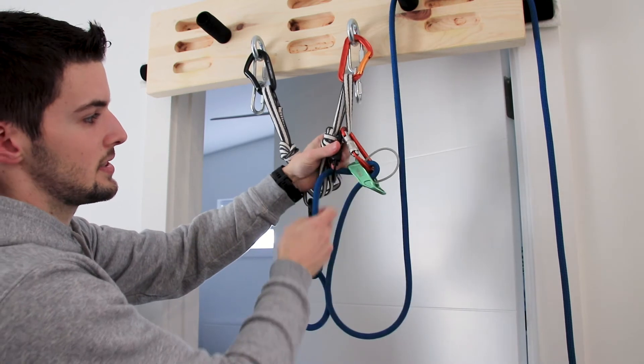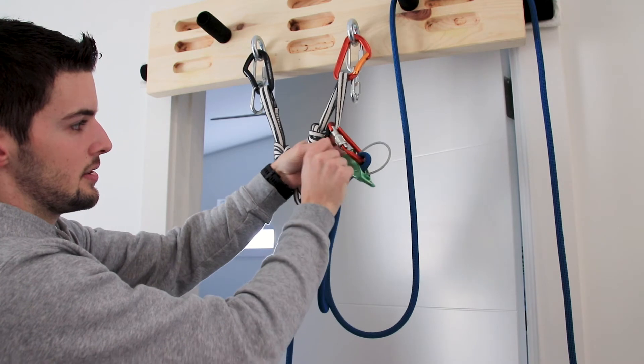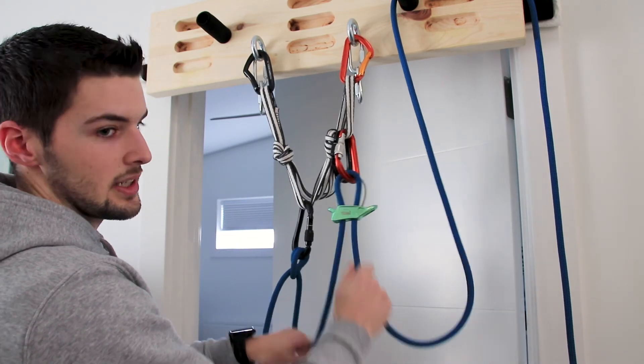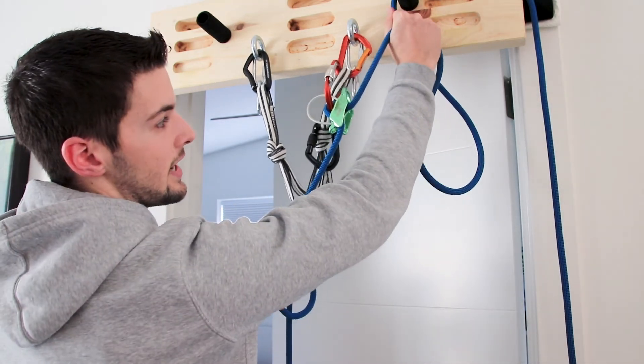Then once the climber gets past the first drop, if you want, you can unclip the brake strand redirect to make the belay motion easier. Because if they fall at this point, everything's going to be pulled up instead of down, so it will automatically go into the braking position.